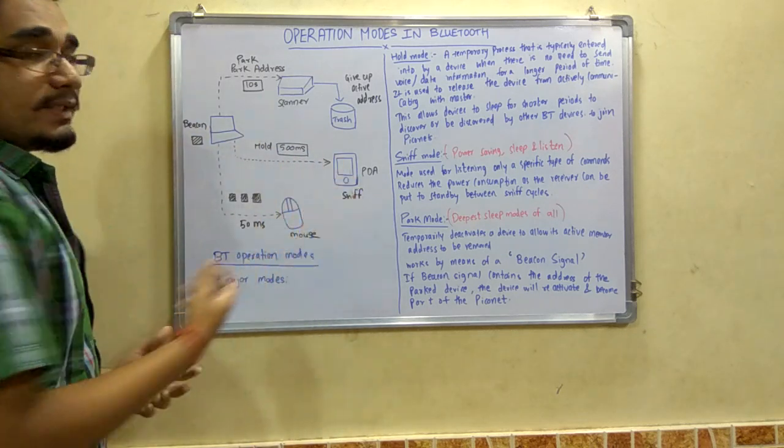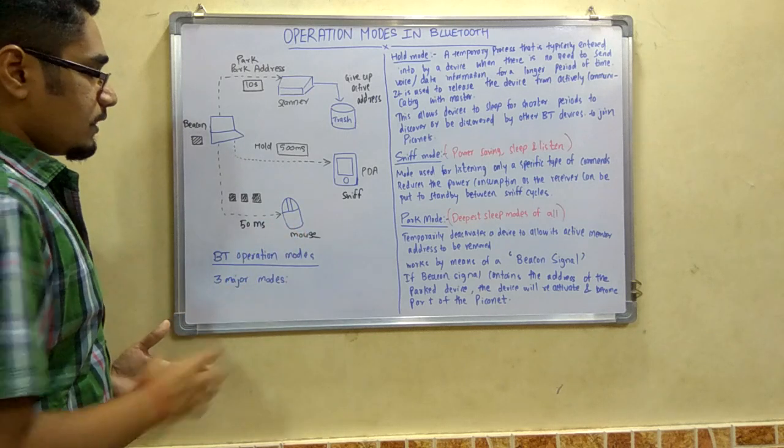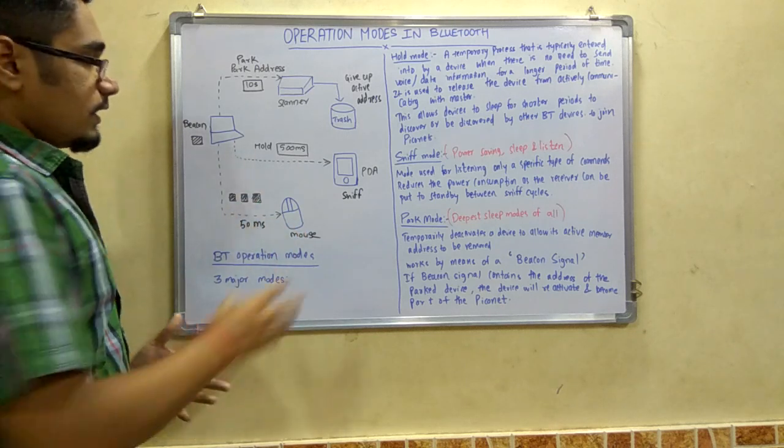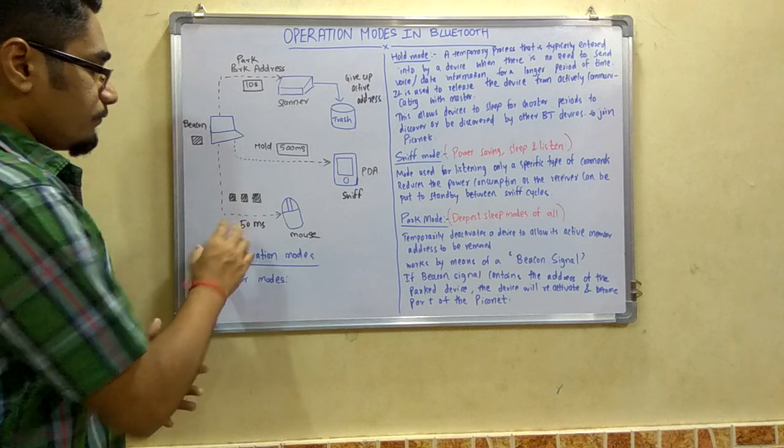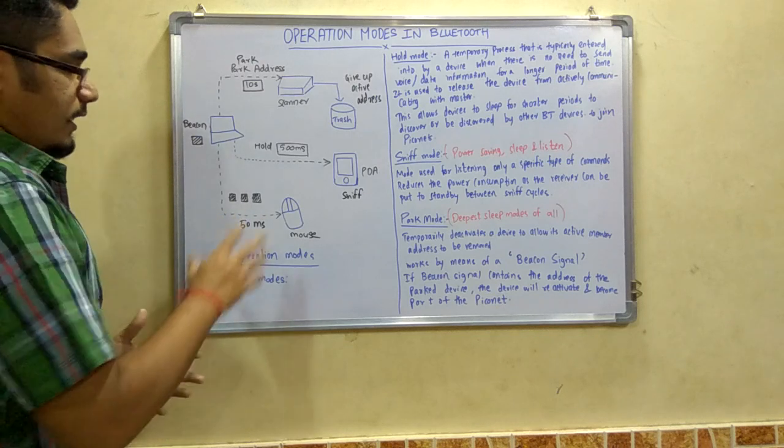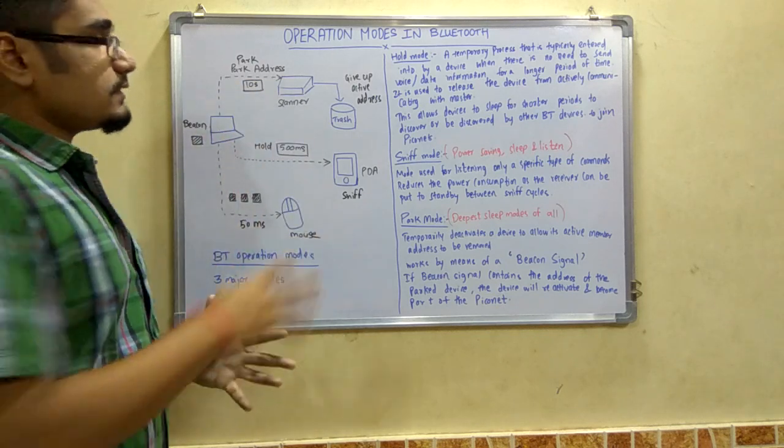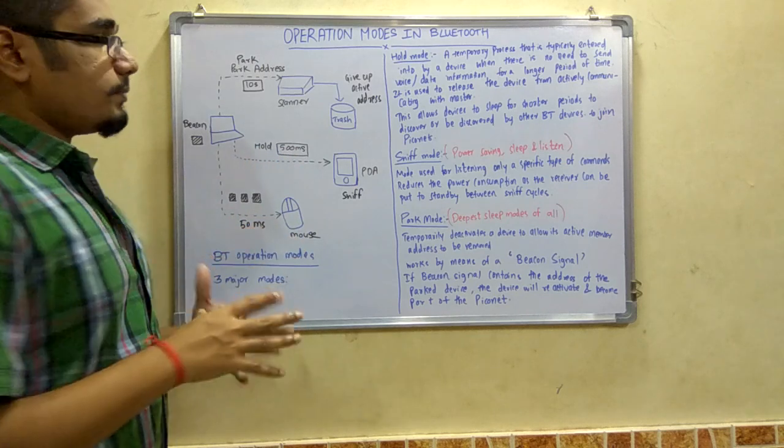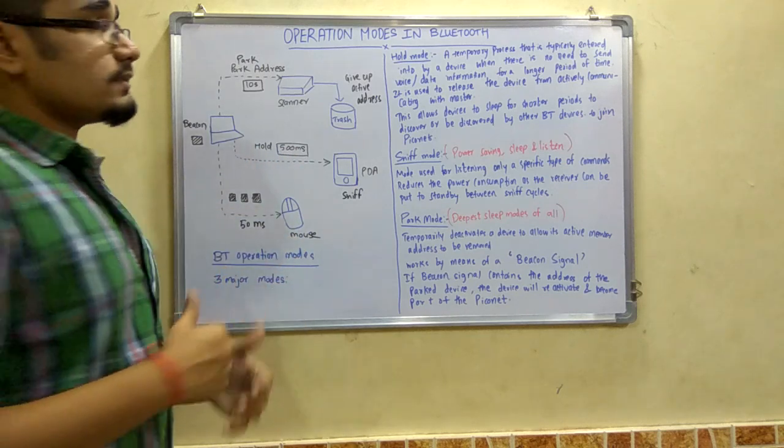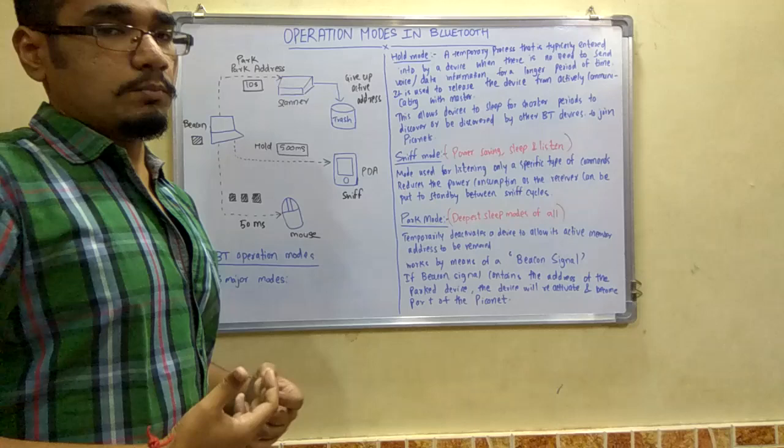It will be sent to the mouse, and this wireless mouse will have a sniff mode of 50 milliseconds. This is how the Bluetooth operation mode works. Let us understand each of these modes in detail.